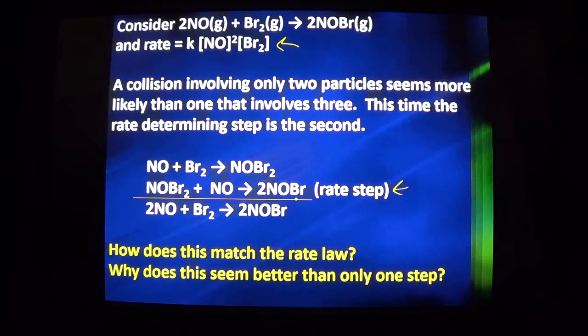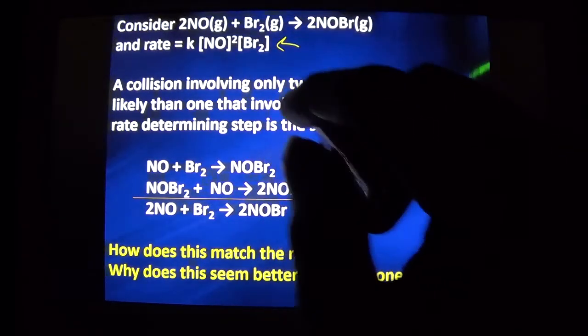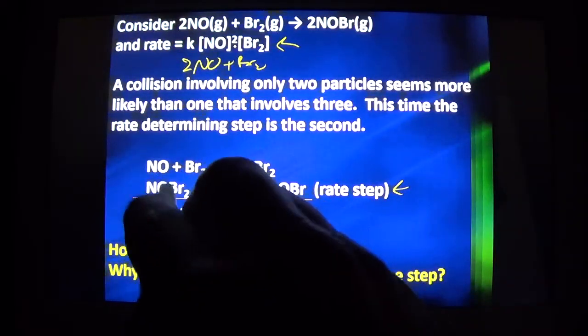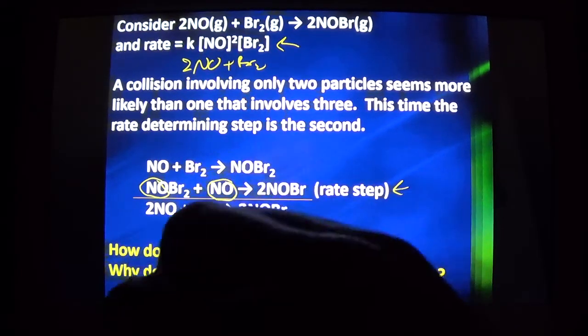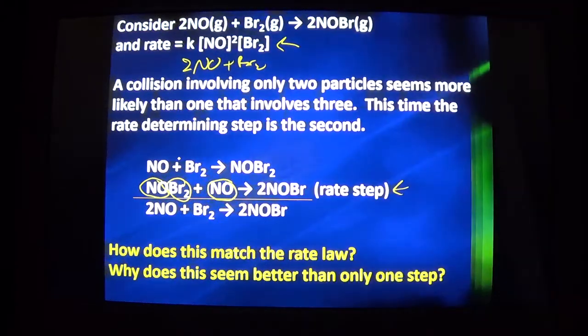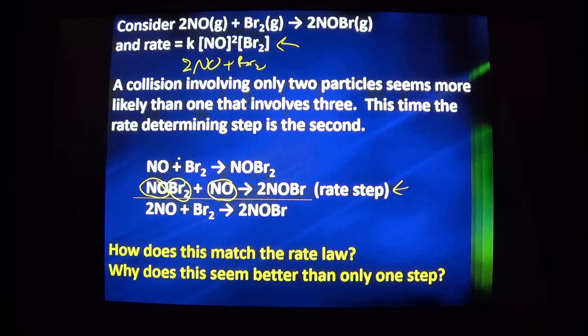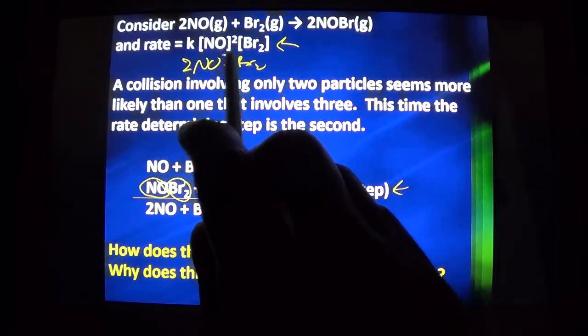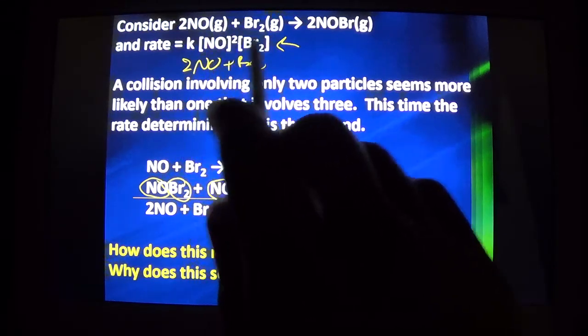Now the question is, does my slow step match the rate determining step? My rate determining step says I should have two NOs added to one BR2. And what do I have here? I have two NOs and one BR2. So it does match, but it doesn't seem right. What doesn't seem right is the fact that we have to put our rate law in terms of the overall balanced equation's reactants. Yet that doesn't have to be the reactants we have in a rate step.